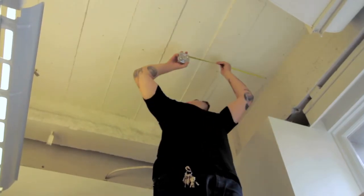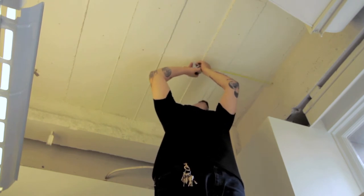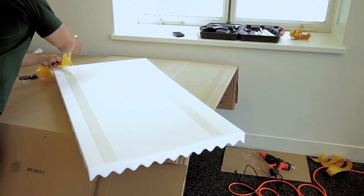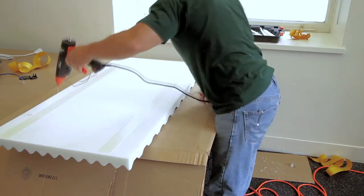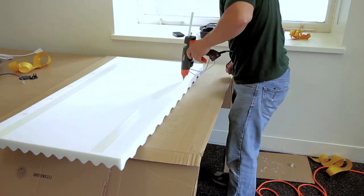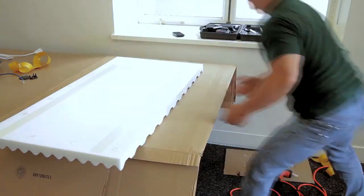We began by measuring the ceiling to find the most optimal placement for the acoustical foam. Once the best placements were marked out, we stuck double-sided tape and glue to attach the acoustical foam to the ceiling.